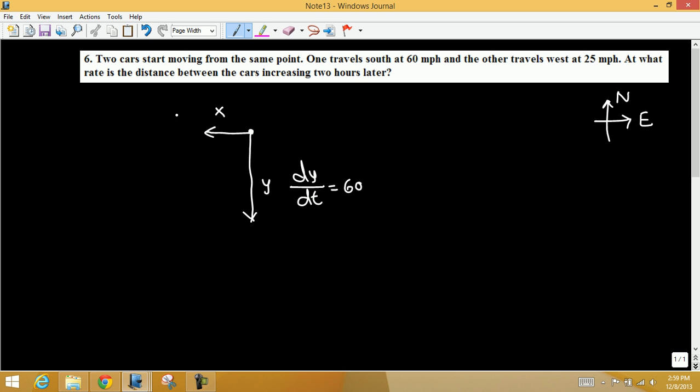This direction is x, and dx/dt is 25 miles per hour. At what rate is the distance between the cars increasing two hours later? The distance between the two cars is also changing. The question is: what is the rate of change of this distance between the cars after two hours?